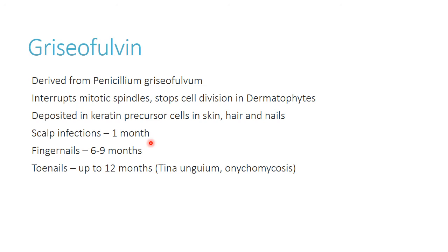For nail infections and things like that, it's difficult for drugs to really penetrate and kill the fungus — not the same as treating bloodstream or esophageal infections. The number one reason people don't clear these infections is stopping treatment too early. Scalp infections take about one month; contrast that with antibiotics, which are typically seven to fourteen days. Fingernail infections require six to nine months of treatment. Toenail infections can require up to twelve months.